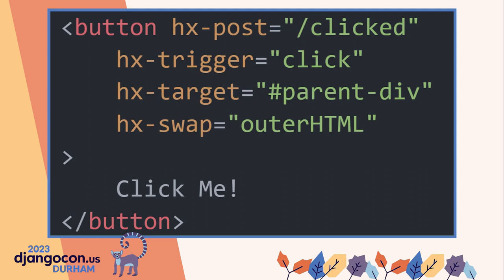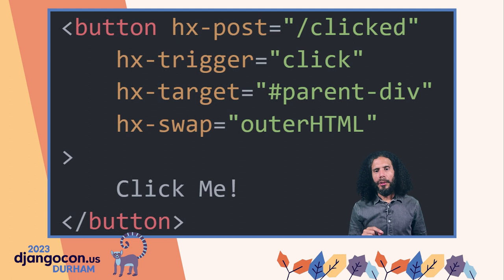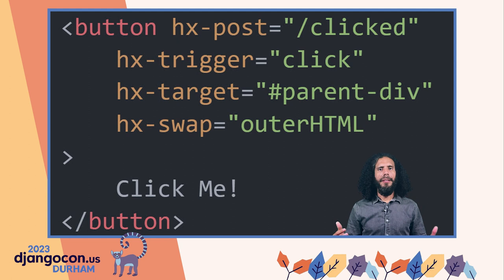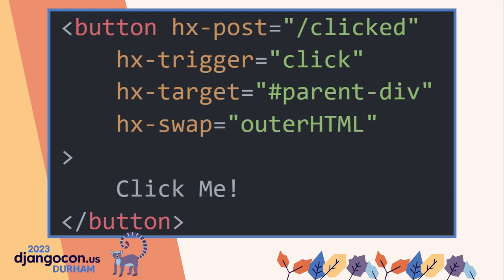I would love for the Django community and even the Python community at large to pull together their resources, their creativity, and their excitement around hypermedia to bring together a more cohesive acceptance of hypermedia-driven design. But before I get to those patterns, I want to talk very briefly about what HTMX looks like. Here's an example from htmx.org. Notice the attributes: hx-post and hx-target. This tells HTMX: when a user clicks on this button, issue an HTTP POST request to the /click endpoint, and use the content from the response to replace the element with the ID parent-div into the DOM.